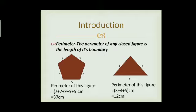For example, this first figure has sides 7, 7, 9, 9, and 5. The perimeter is the sum of the sides, so 7 plus 7 plus 9 plus 9 plus 5 equals 37 cm. Second, we have a triangle with sides 3, 4, 5, so the perimeter of this figure equals 3 plus 4 plus 5, that is equal to 12 cm.